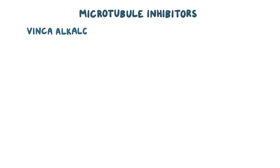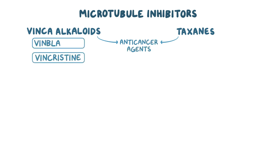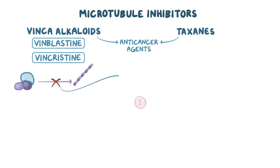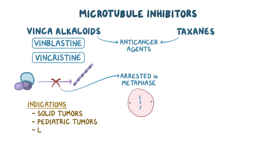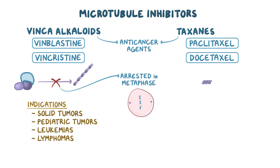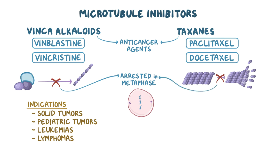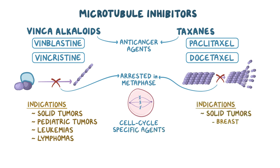As a quick recap: microtubule inhibitors like vinca alkaloids and taxanes are used as anti-cancer agents. Vinca alkaloids include vincristine and vinblastine, and work by binding to beta-tubulin and blocking microtubule formation, arresting affected cells in metaphase. They are used for solid tumors, pediatric tumors, leukemias, and lymphomas. Taxanes include paclitaxel and docetaxel, and work by overstabilizing microtubules and preventing their breakdown during anaphase, also arresting cells in metaphase. Both vinca alkaloids and taxanes are cell-cycle specific agents. Taxanes are used for solid tumors like breast and ovarian cancers.